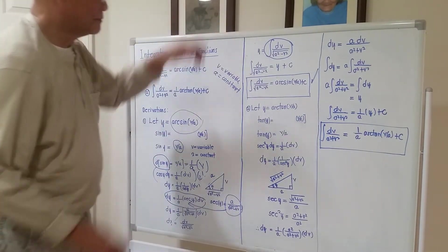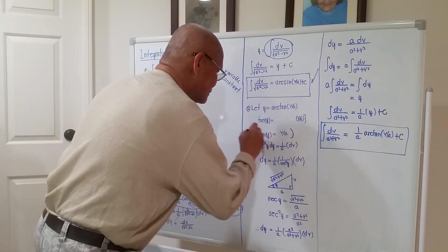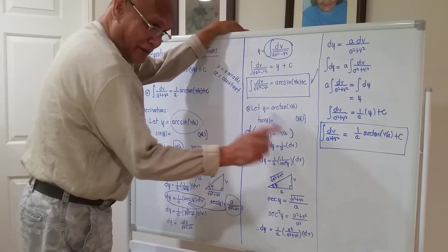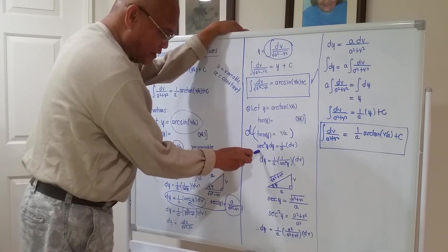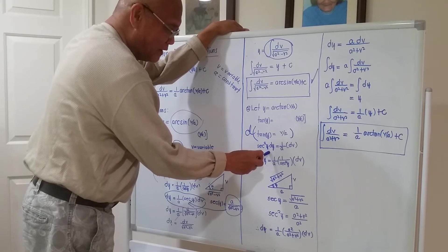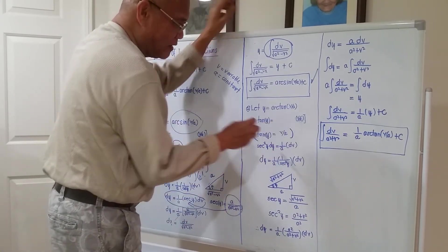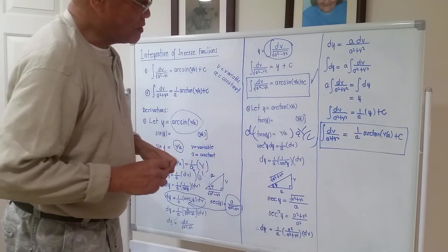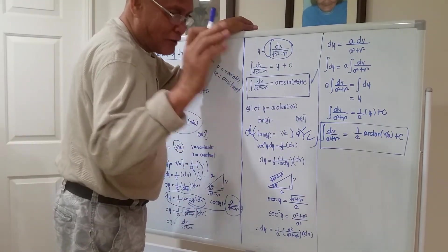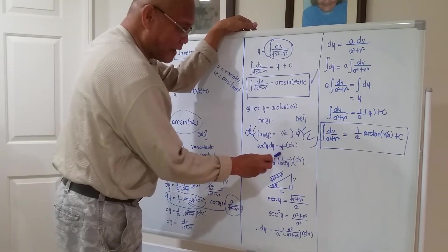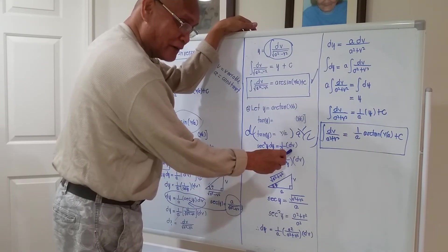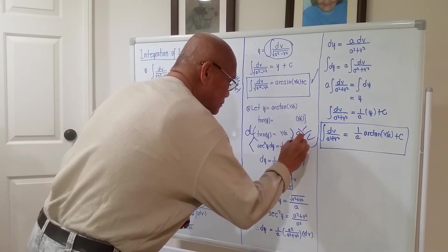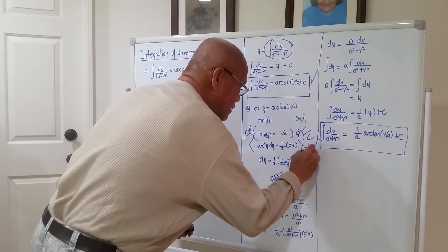Take the differential of both sides. The differential of tangent of y is secant squared, so it is secant squared of y times dy, equal to one over a times db — since a is constant, we differentiate the constant times the function, giving one over a times db. Then multiplying all terms by one over secant squared of y, the secant squared of y cancels, leaving dy equal to one over a times one over secant squared of y times db.